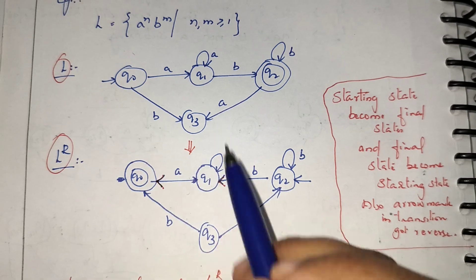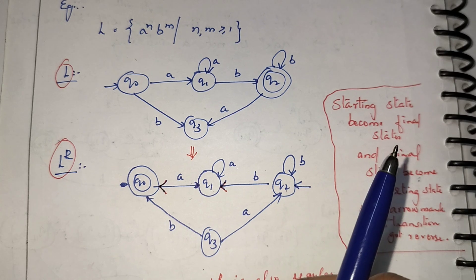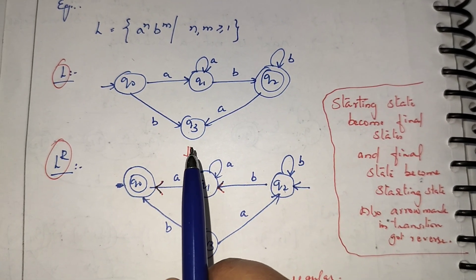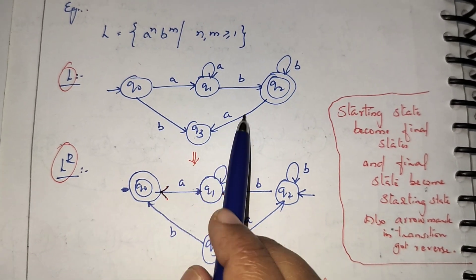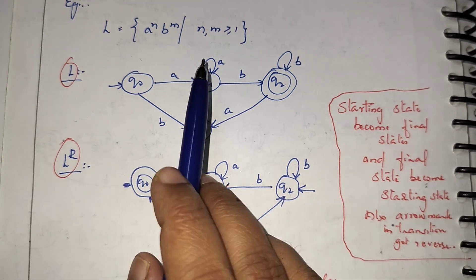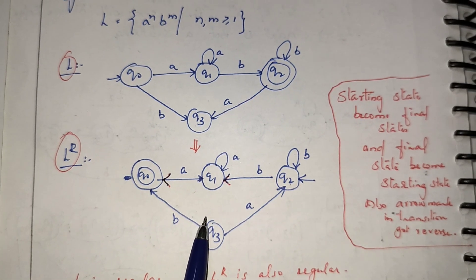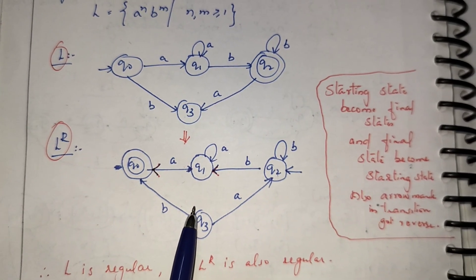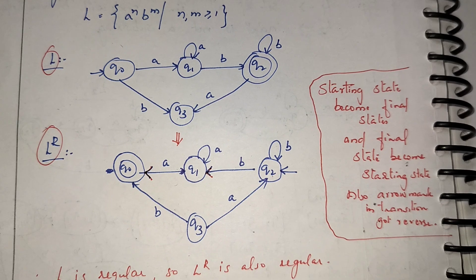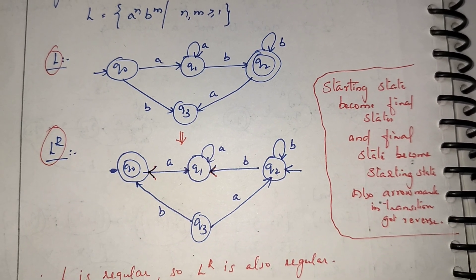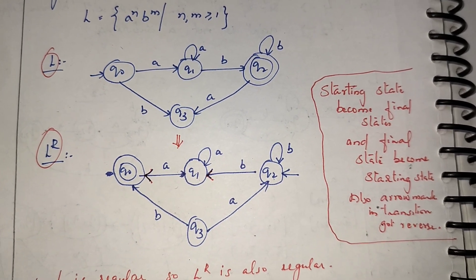For reversal, instead of the original transitions, give the reverse transitions: the starting state becomes the final state and the final state becomes the starting state, and you also reverse all transitions. So if L is a regular language, then L raised to R — the reversal of that language — is also a regular language; we can draw the automaton or write the regular expression. In the next video I will explain how to convert a DFA to a regular expression, and vice versa.